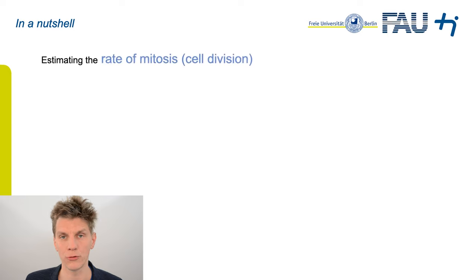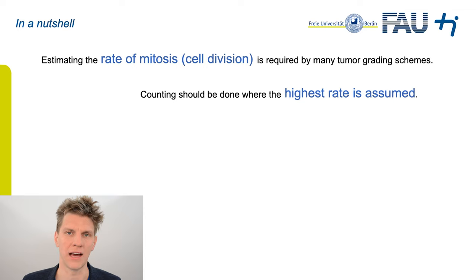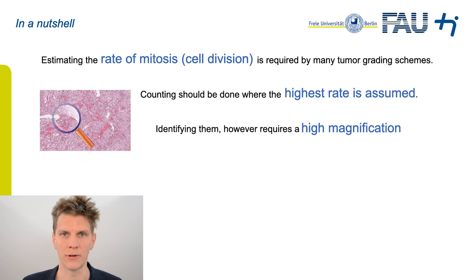Estimating the rate of dividing tumor cells, or so-called mitosis, is important and is required by many tumor grading schemes. It shall be done wherever the expected rate is to be the highest. This, however, is somewhat an ill-conditioned problem. You also need a very high magnification in order to identify single mitotic cells.